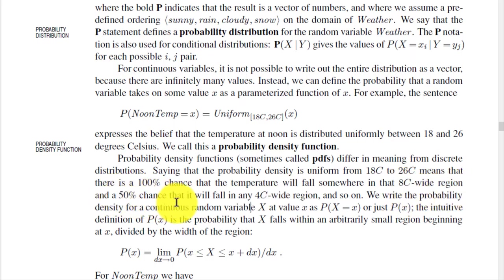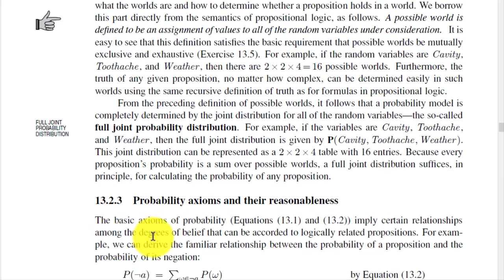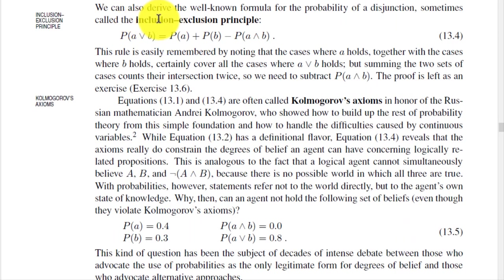The next point is probability axioms and their reasonableness. The basic axioms of probability imply certain relationships among degrees of belief accorded to logically related propositions. We can derive the familiar relationship between the probability of a proposition and the probability of its negation. We can also derive the well-known formula for the probability of a disjunction, sometimes called the inclusion-exclusion principle.